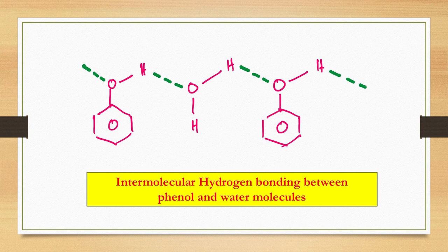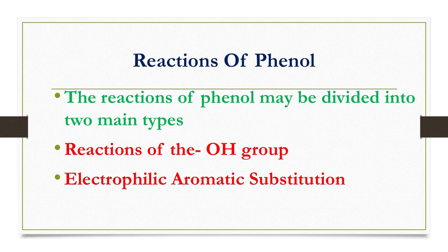Now let us see the chemical properties — the chemical reactions of phenol. The reactions of phenol may be divided into two main types: reactions of the OH group, and reactions due to the benzene ring, that is, electrophilic aromatic substitution.